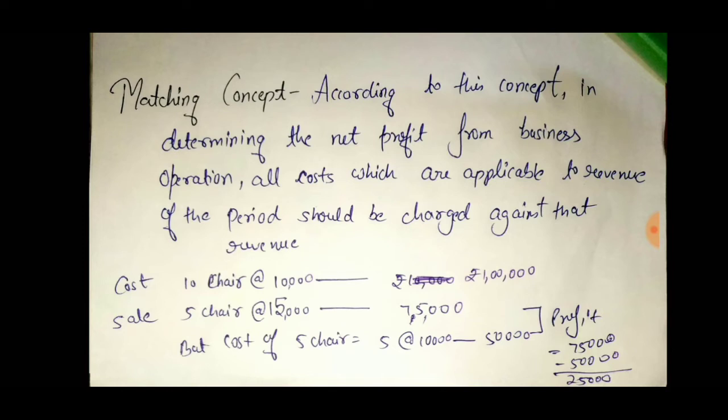You bought 10 chairs at 10,000 rupees each, so total cost is 1 lakh rupees. Now you sold 5 chairs at 15,000 rupees each, giving you revenue of 75,000 rupees.